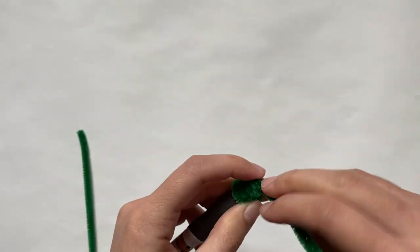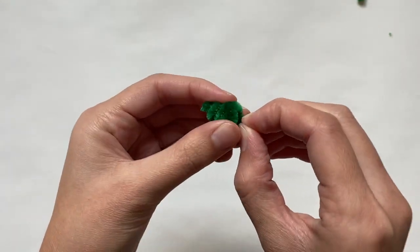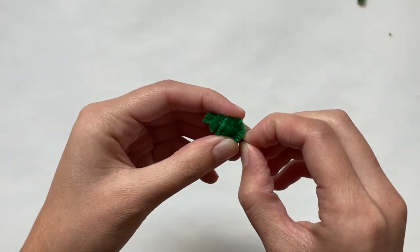Once I got to the top, I bent it upwards and then just trimmed it short so there's a nice pointy top. I'm going to attach this to a base later, so I took one of the bottom levels of pipe cleaner and just bent it straight down.